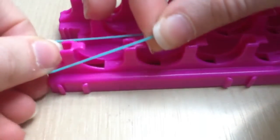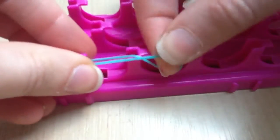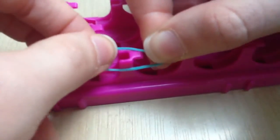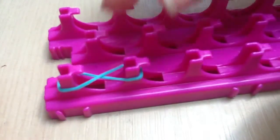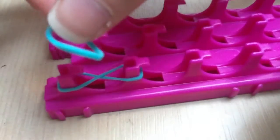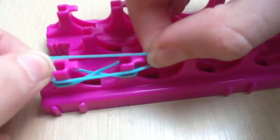Place it on your fingers or, in my case, the loom like so. Take your second rubber band and just place that on top.